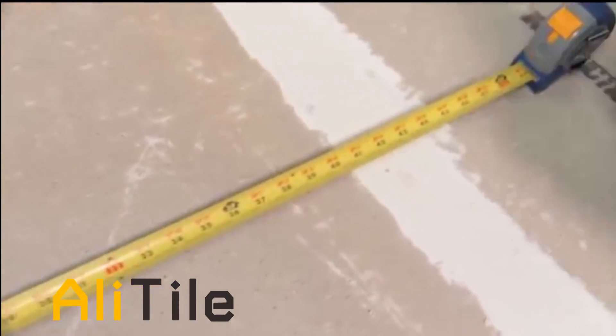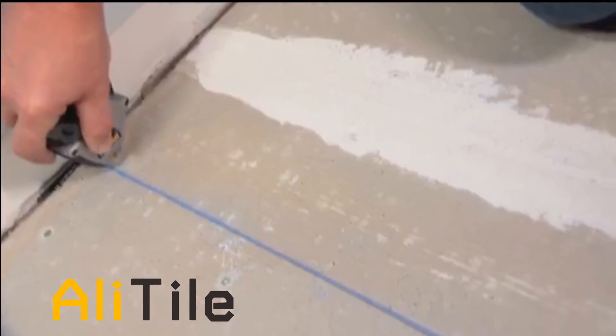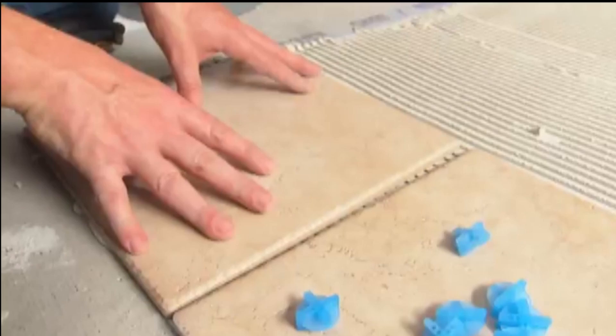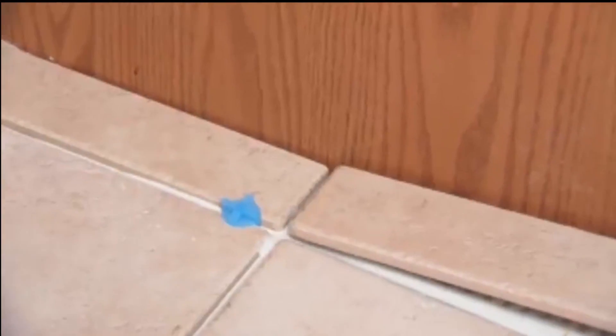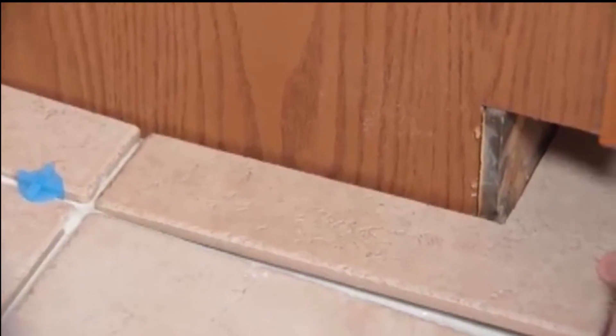If you remember from the previous video, we marked reference lines on the backer board to help us lay the tiles square to the room. We'll start laying our tiles in the center of the room and work out. That way the full tiles will be in the center and the cut tiles will be along the edge.